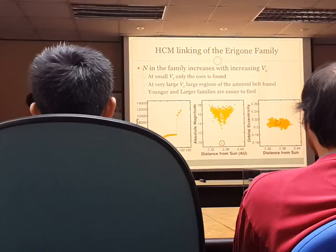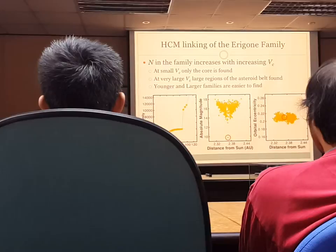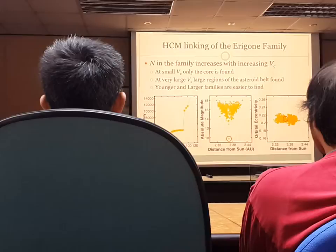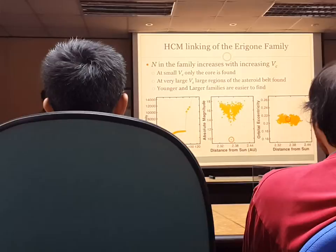Larger — or smaller — families suffer similar fates, where there are just so few members that the family doesn't clearly stand out to the algorithm or by eye. So our younger and larger families are easier, while older and smaller families are where this mechanism really, really struggles.